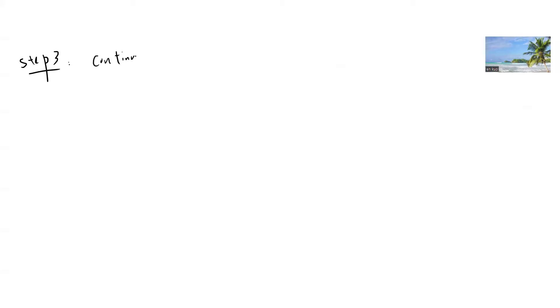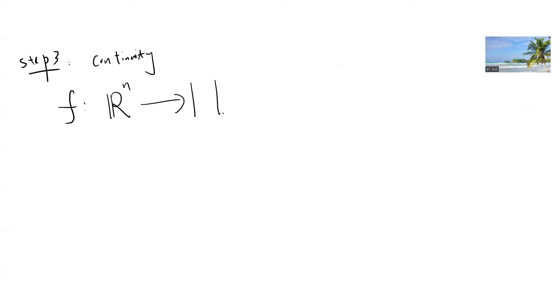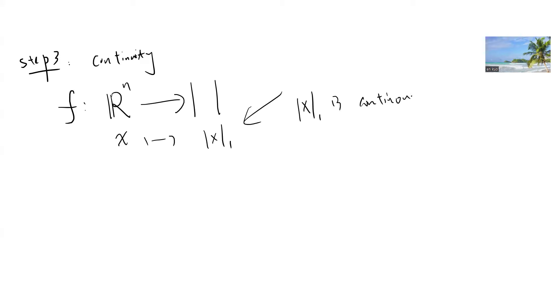Step three is just using continuity. Notice that I can define a function f from R^n to the particular norm that I want to show equivalence for — given x, I just apply the norm. Continuity says that this norm function is a continuous function. This proof is trivial just by definition — you can prove this from the definition of norm.